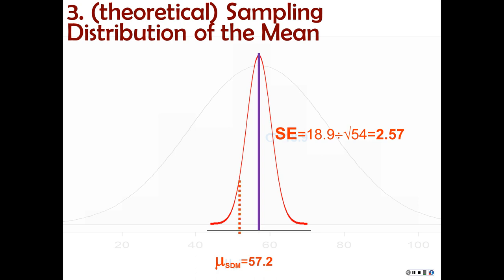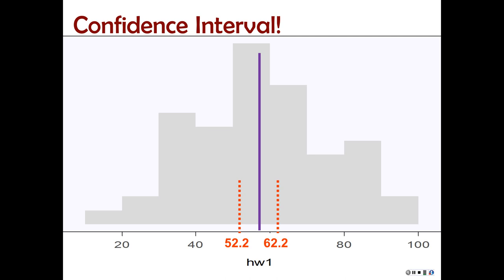Our estimate for our mean is really pretty tight. And if we just chop off 2.5% of that distribution in each tail, we find that the scores corresponding to chopping off 2.5% — the distribution of all possible means obtained under these assumptions — range from 52.2 to 62.2. So 95% of them will lie within that range. We can then say we are 95% confident that the true population mean for all scores on homework 1 lies between 52.2 and 62.2 points. That's a really low score.